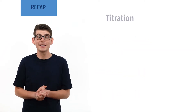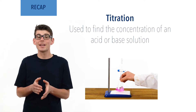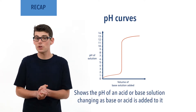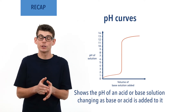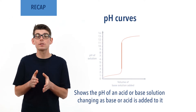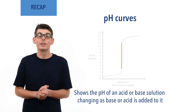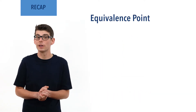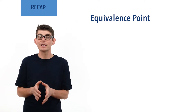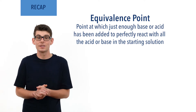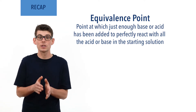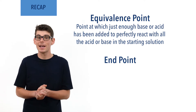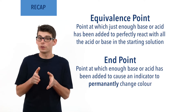A titration is a practical technique that can be used to find the concentration of a solution of an acid or base. pH curves for acid-base titrations show how the pH of an acid or base solution changes as an opposite solution of base or acid is added to it. A sharp change in pH occurs as the solution changes from acidic to alkaline, and it is this sharp change that enables an indicator to show when a titration is complete. Equivalence point refers to the point when just enough base or acid has been added to react with all the acid or base molecules in the starting solution. End point refers to the point when just enough base or acid has been added to cause an indicator to permanently change colour.